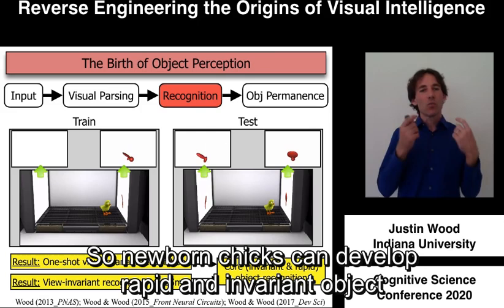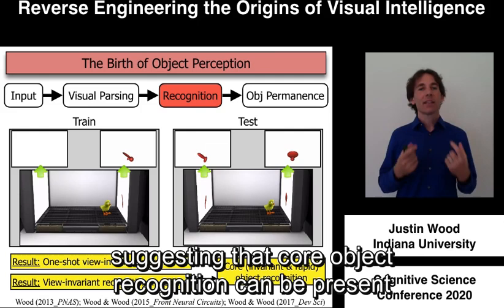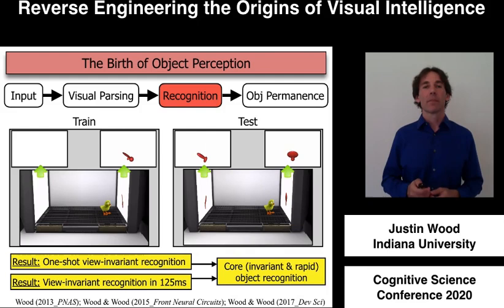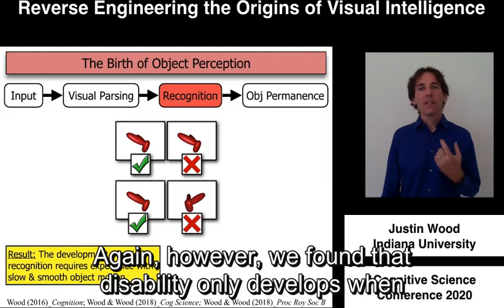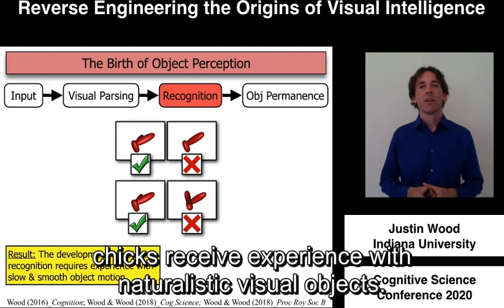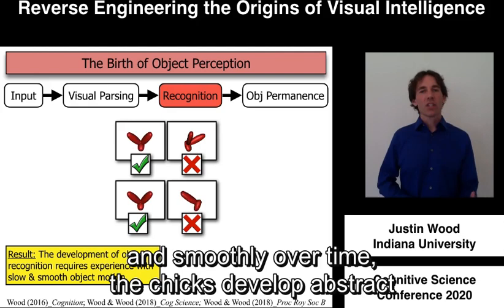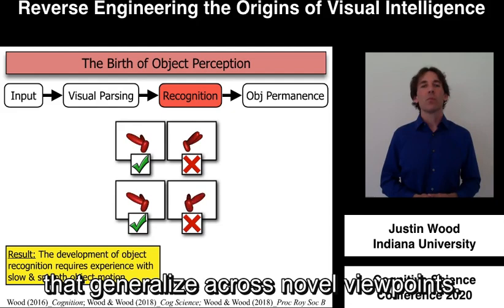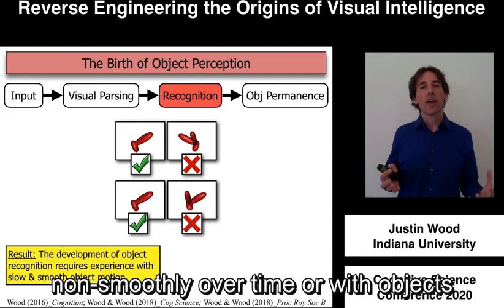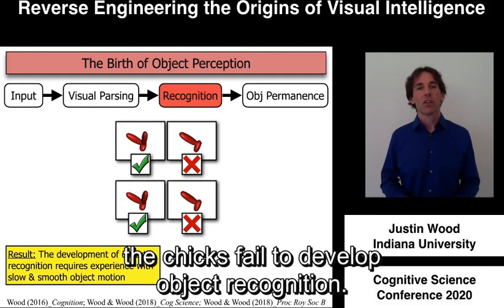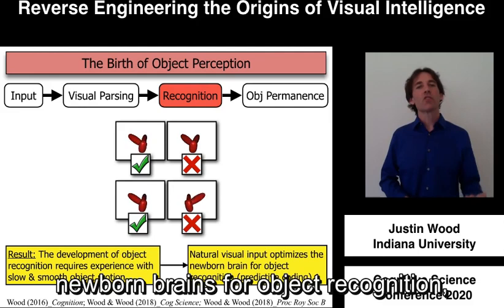So newborn chicks can develop rapid and invariant object recognition from minimal training data, suggesting that core object recognition can be present and functional within the first days of life. However, this ability only develops when chicks receive experience with naturalistic visual objects. When chicks are raised with objects that move slowly and smoothly over time, they develop abstract and invariant object representations that generalize across novel viewpoints. But when chicks are raised with objects that move non-smoothly, or with objects that move too quickly, the chicks fail to develop object recognition. So slow and smooth object motion appears to optimize newborn brains for object recognition, consistent with predictive coding models in computational neuroscience.